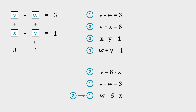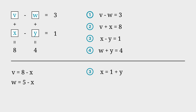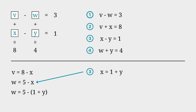Let's put those two equations aside. Equation 3 is X minus Y is equal to 1. Isolate X by adding Y to both sides and you'll have X is equal to 1 plus Y. Substituting this into the W equation gives us W is equal to 4 minus Y.